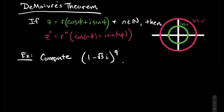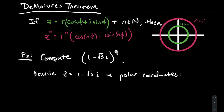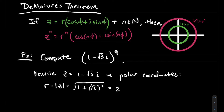Let's look at an example. How do we use De Moivre's theorem to compute a power of a complex number — like a ninth power? The first thing we're going to do is label the base 1 minus root 3i as z, and put z in polar coordinates. I find the absolute value — another word for that is modulus. Taking the absolute value gives us the square root of 1 plus negative square root of 3 quantity squared, which gives 1 plus 3 under the radical, and of course you get 2.